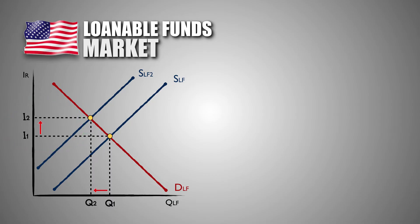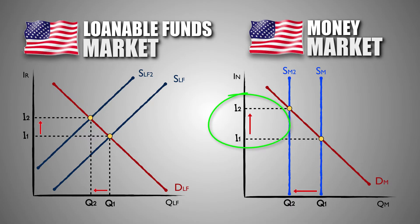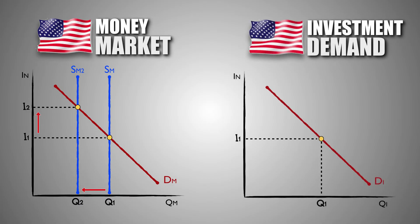With less reserves available in the American banking system, the supply of M1, M2, and M3 money decreases in the American money market, which drives up nominal interest rates in the United States economy. As nominal interest rates rise, American firms will want to avoid paying higher interest on every dollar they borrow. Domestic firms are now less willing and able to borrow money because it is more expensive. As a result, investment spending by domestic firms will decrease.